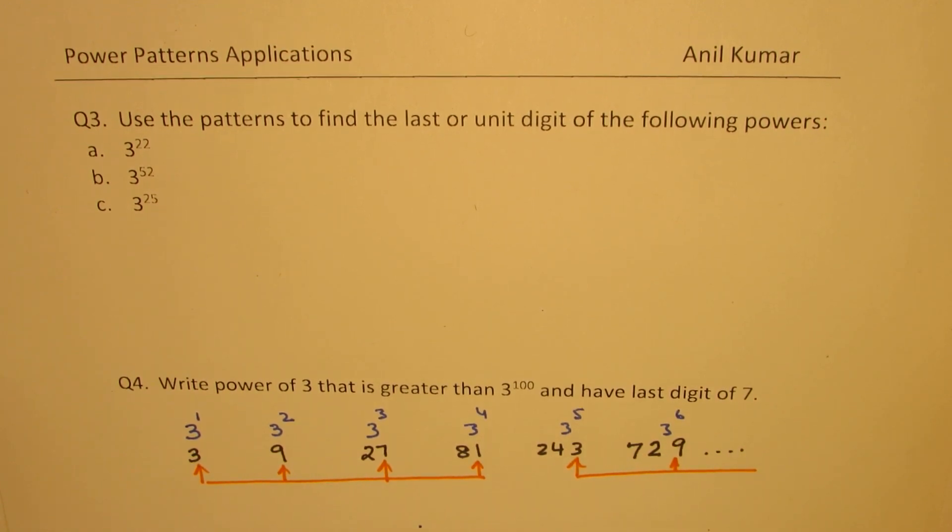So, from this pattern rule, we can say in general that if I have 3 to the power of n, and if I divide n by 4, in that case, remainder will decide the unit's digit.